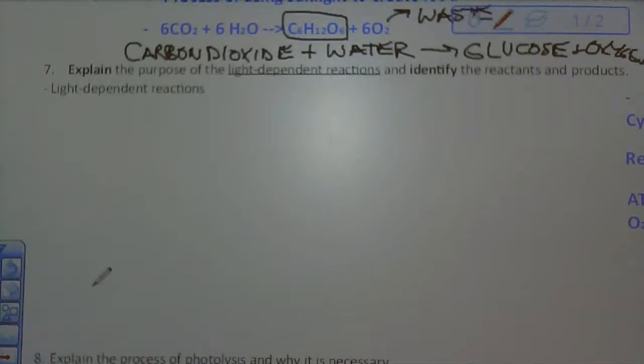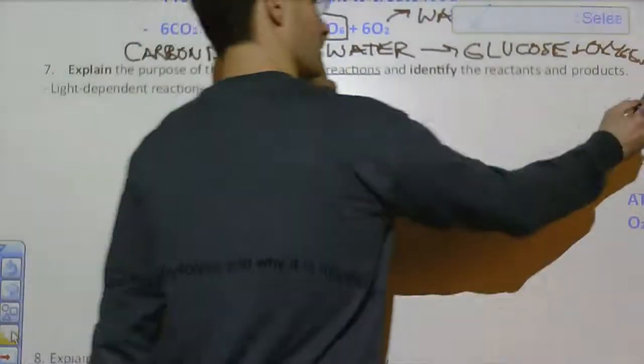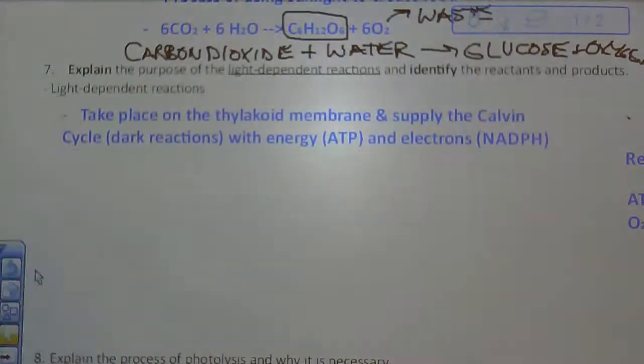So number seven, we're going to talk about the purpose of the light-dependent reactions. I will simplify that by calling them the light reactions. And we're going to talk about the reactants and products. So the light-dependent reactions, or light reactions, very simply, take place on the thylakoid membrane and supply the Calvin cycle, also known as the dark reactions, with energy in the form of ATP and electrons in the form of NADPH.